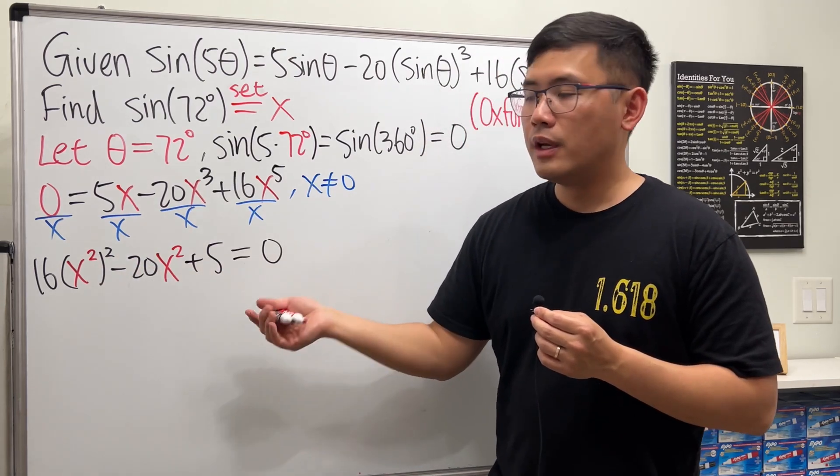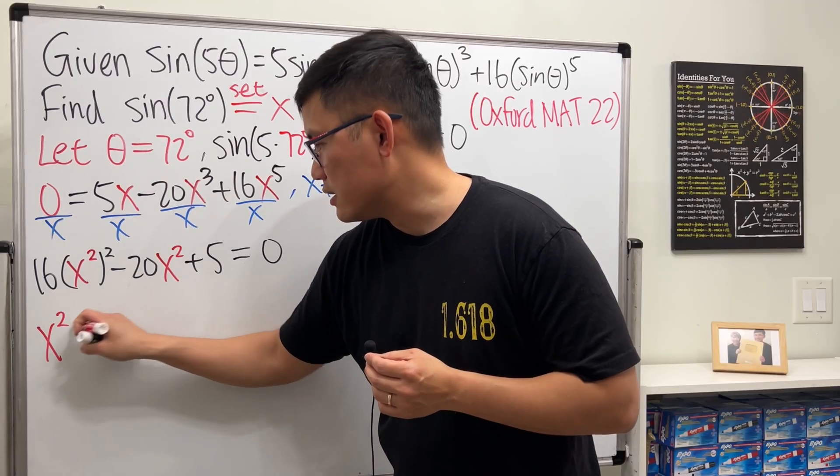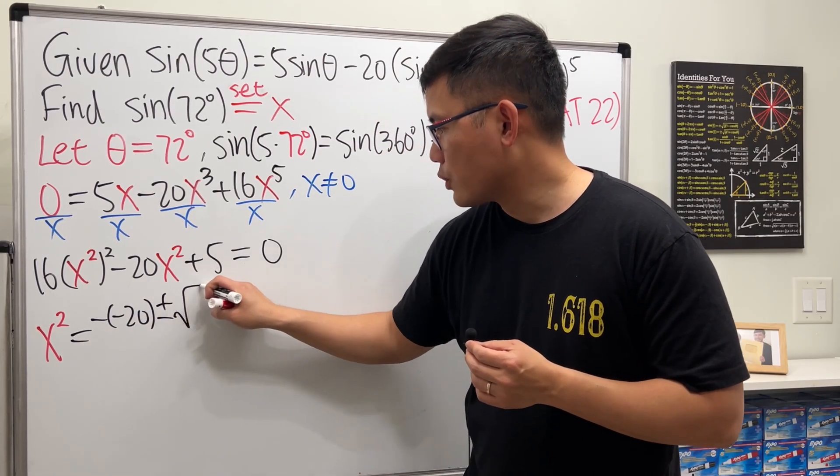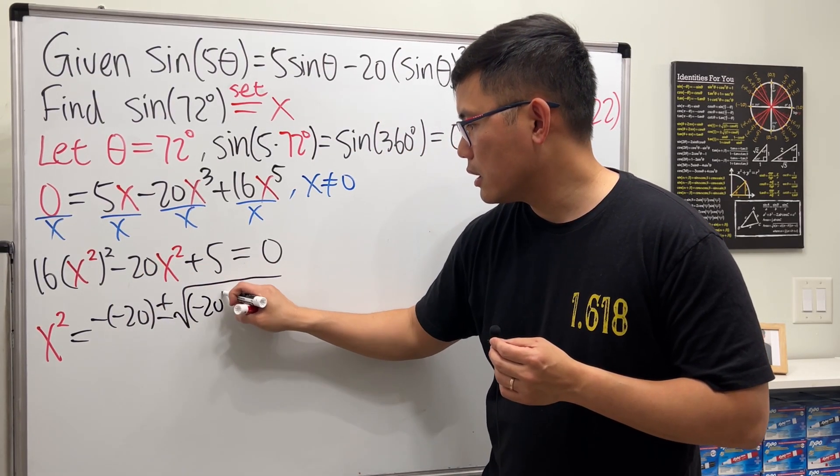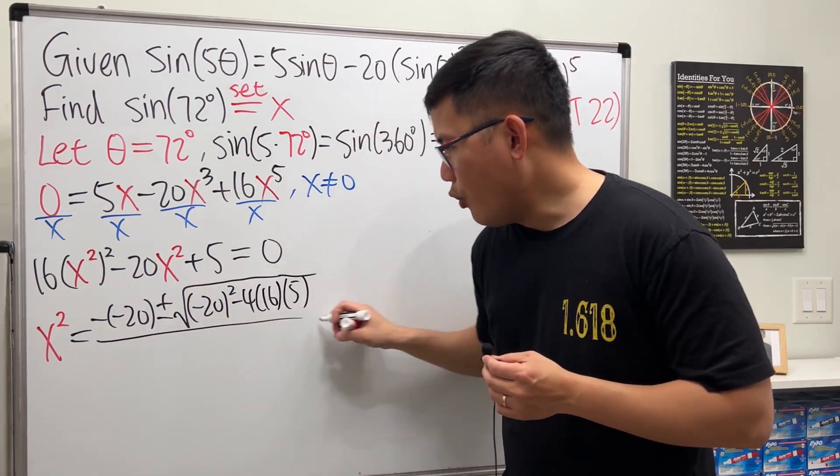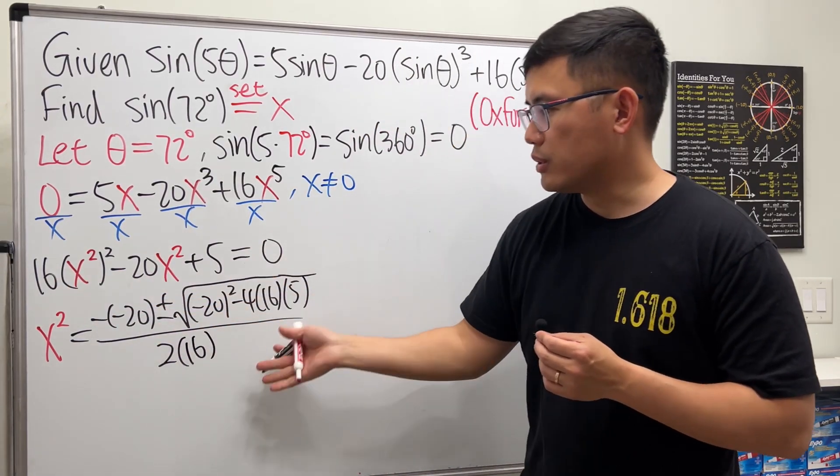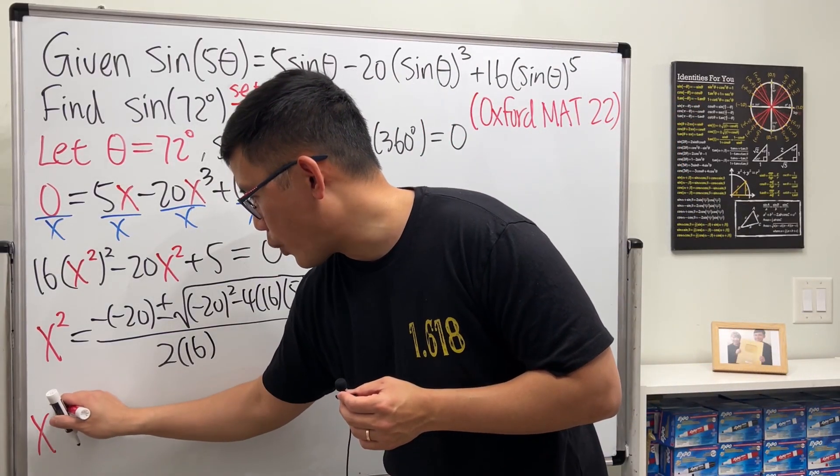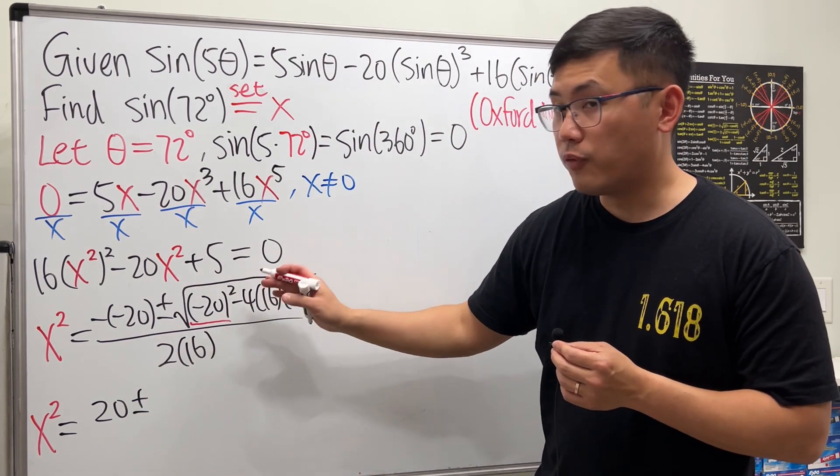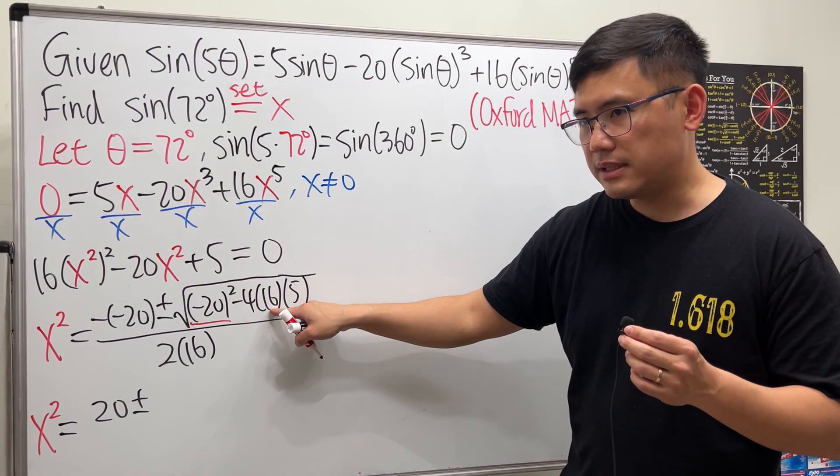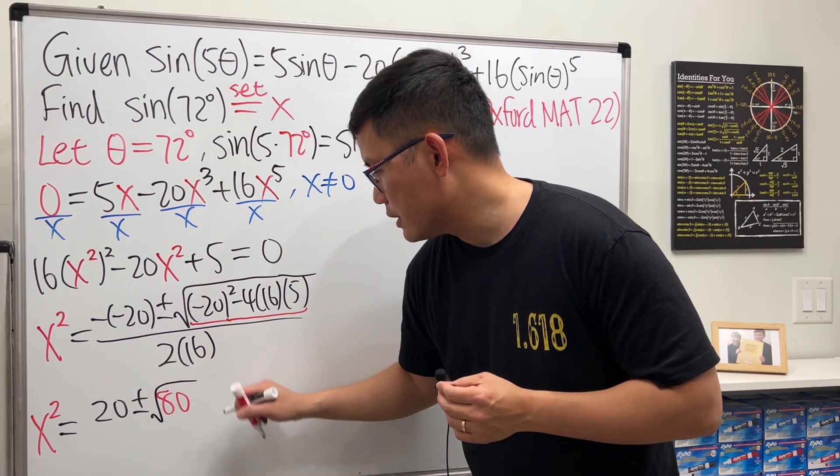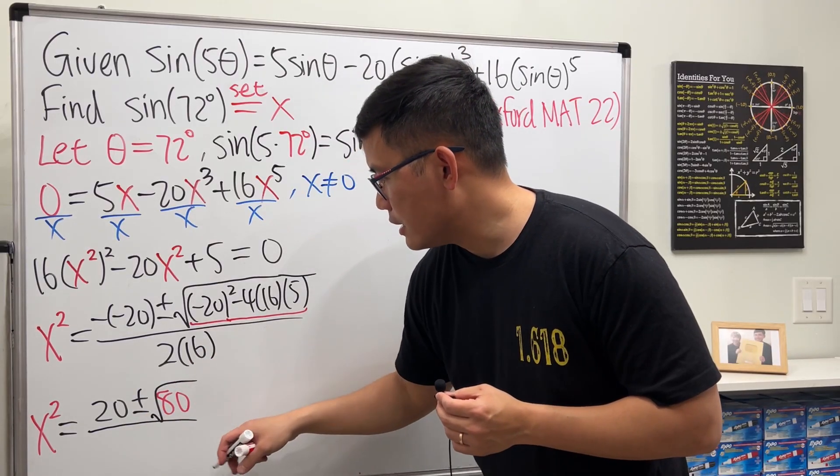So we have an equation in the quadratic form, and here the input is x². We can solve this by using the quadratic formula. Unfortunately this is not factorable. So x² equals negative b plus or minus square root of b² minus 4ac all over 2 times a. And now we just have to simplify this. So we have x² equals 20 plus or minus—negative 20 squared is 400, 4 times 5 is 20 times 16 is 320, so 400 minus 320 is equal to 80.